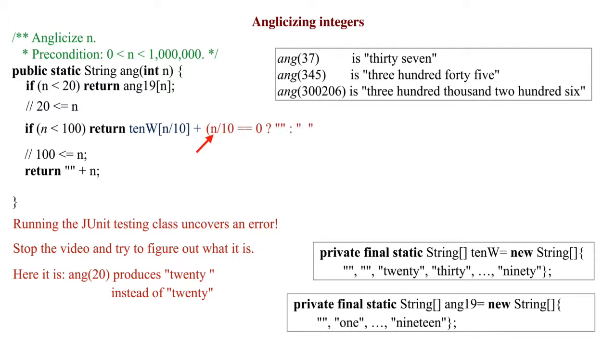We rewrite the return statement using a conditional expression. Now, the test case passes. It is most important that we tested before moving on to consider the case 100 at most n. The same kind of error would have happened in later code too. Make alternating programming and testing a habit.